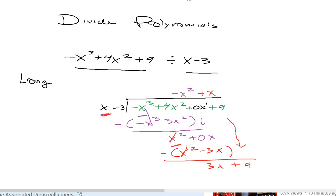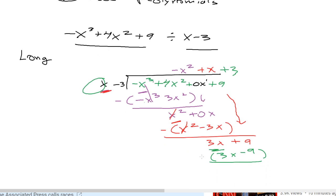And we repeat the same process. How many times can x divide 3x? The answer is 3 times. 3 times negative 3 is negative 9. 3 times x is 3x. And the last step here is to subtract 9 minus negative 9 is 18.